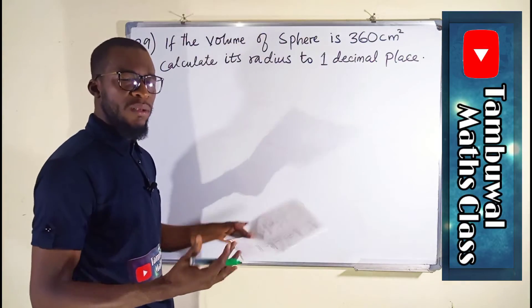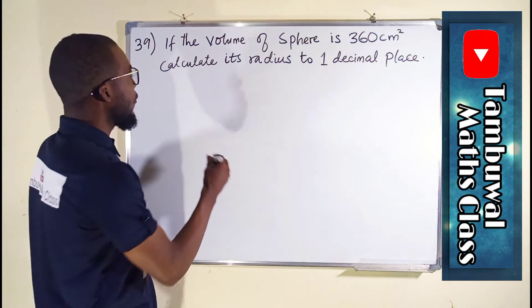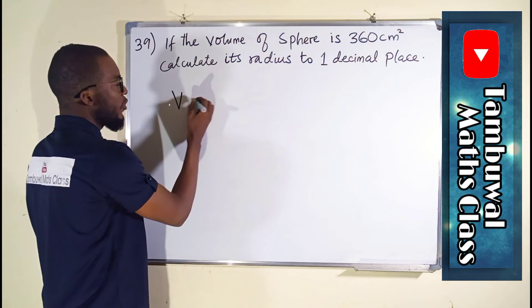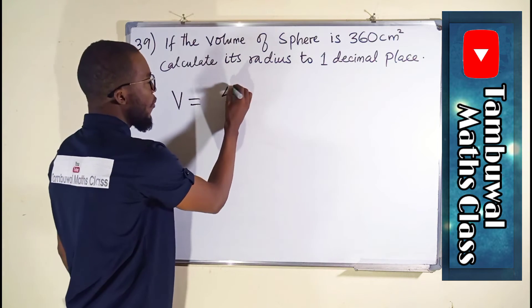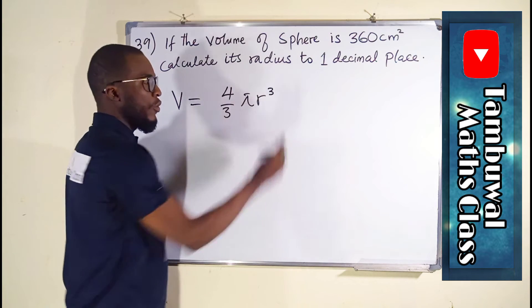A sphere is a three-dimensional figure, just like a ball, and the formula for finding its volume is V = 4/3 πr³.